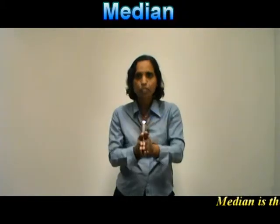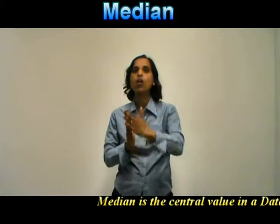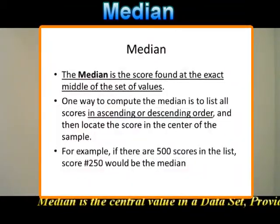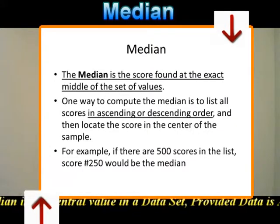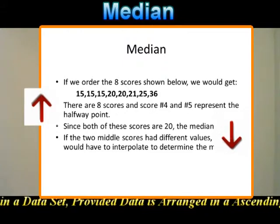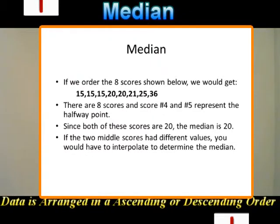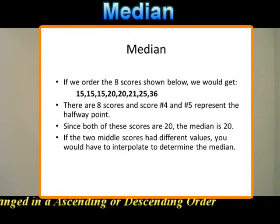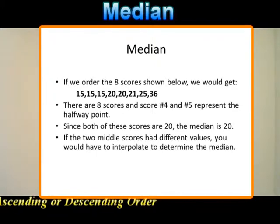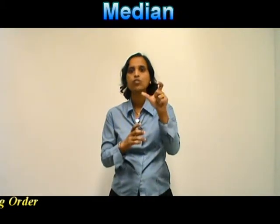Next is the median. The median is the central value in the given data set. To find it, we arrange the data in ascending or descending format and look at the central value. When the number of observations is odd — for example, 21 observations — the 11th observation is the median. When we have an even number of observations, such as 20, we take an average of the central two values by adding them and dividing by two.